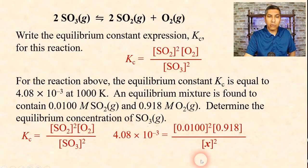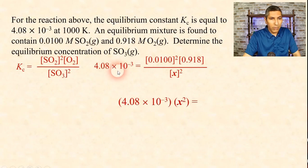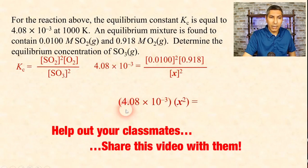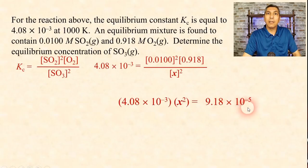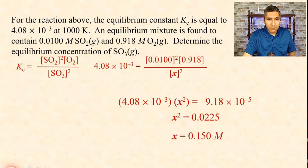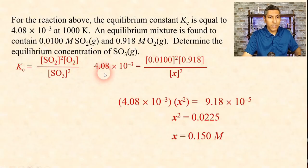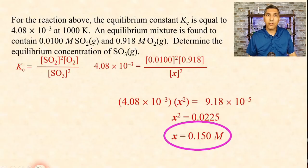Now we have an algebra equation and we solve for X. Cross-multiplying gives us 4.08 times 10 to the negative third times X squared equals 0.0100 squared times 0.918, which is 9.18 times 10 to the negative fifth. Dividing both sides by 4.08 times 10 to the negative third, X squared equals 0.0225. Taking the square root gives X equals 0.150. The unit for concentration is molar, so the concentration of SO3 is 0.150 molar.